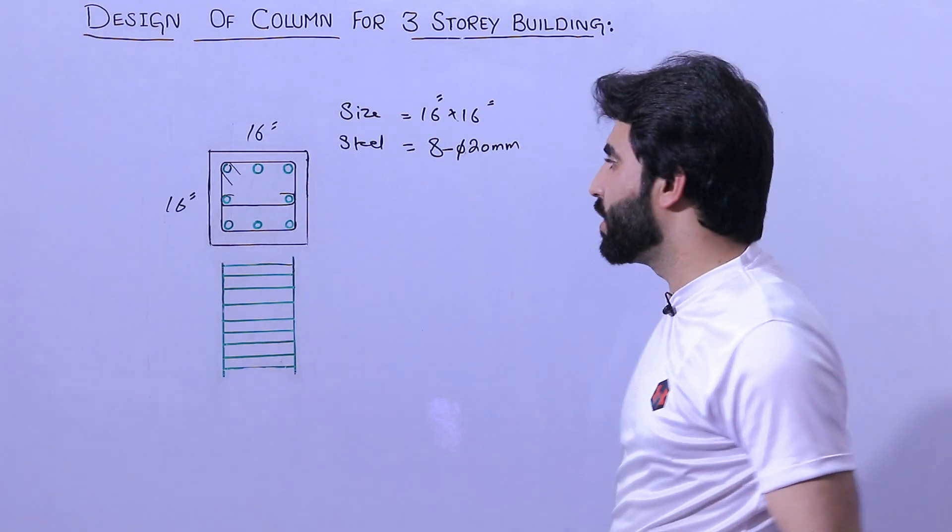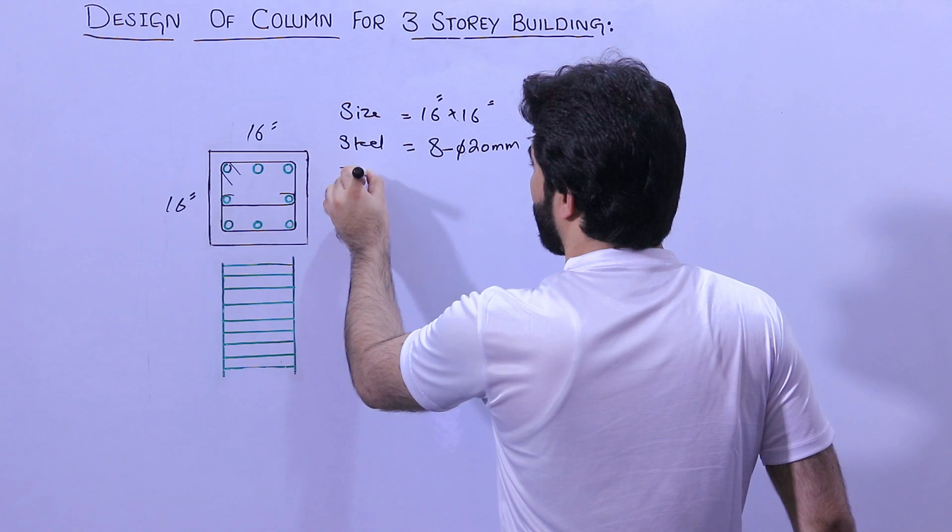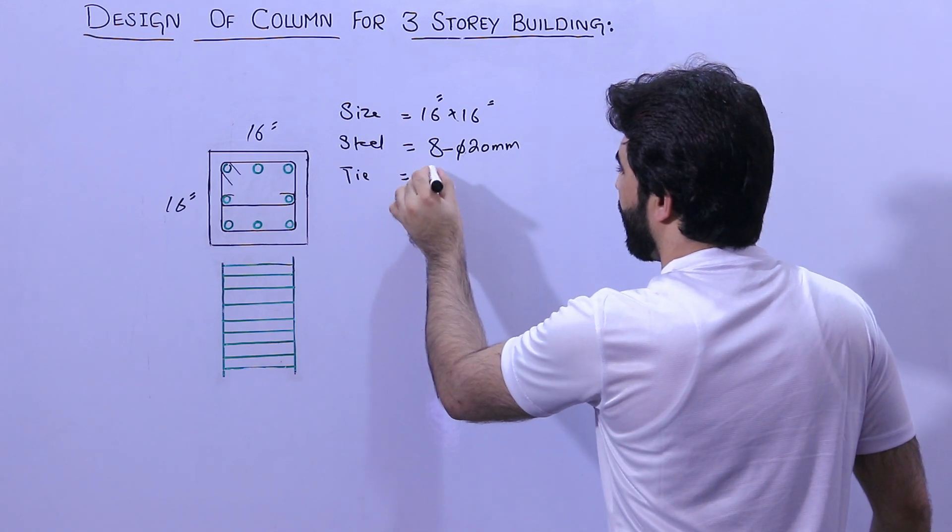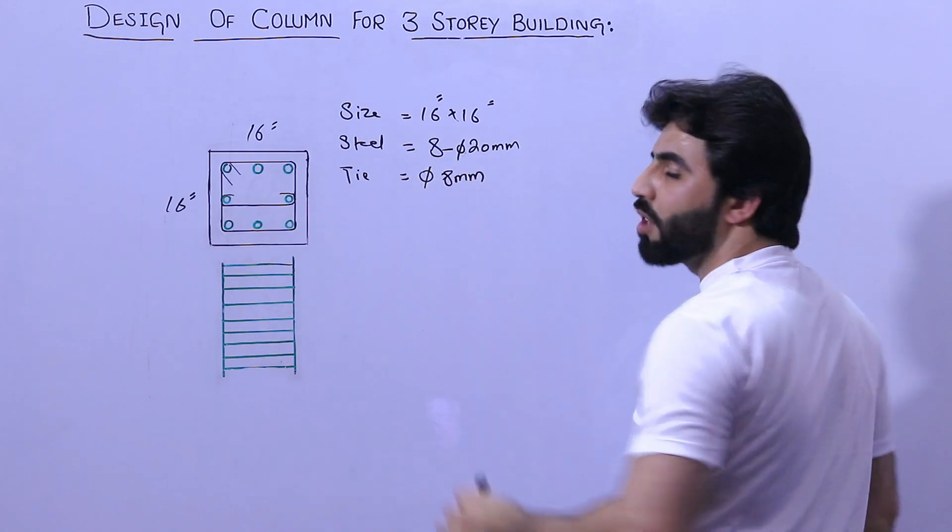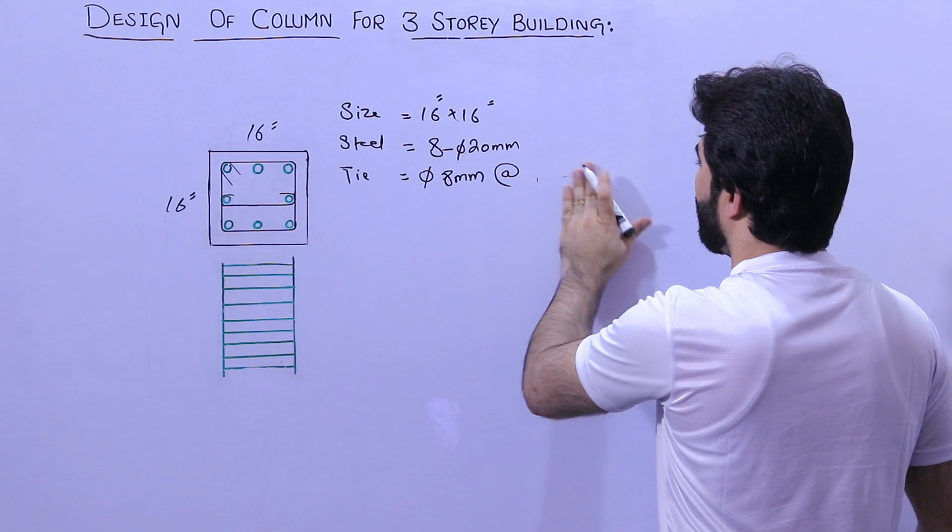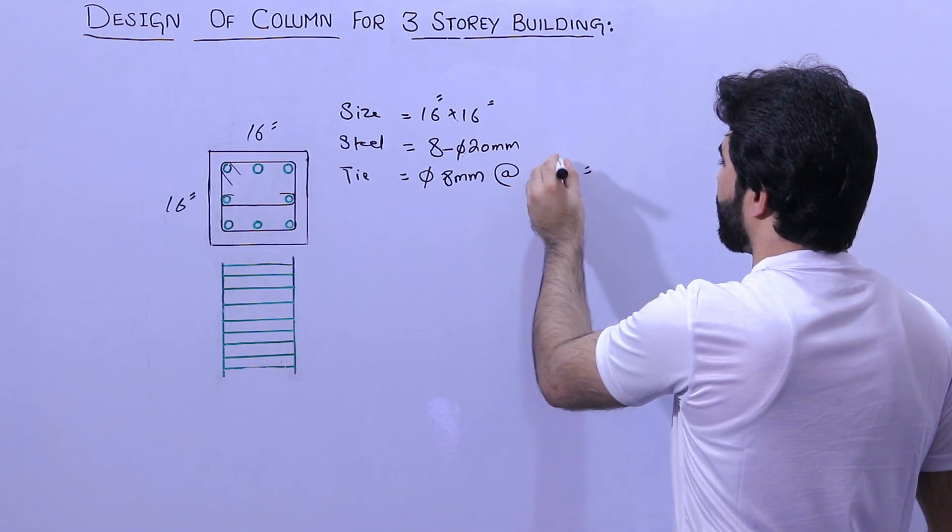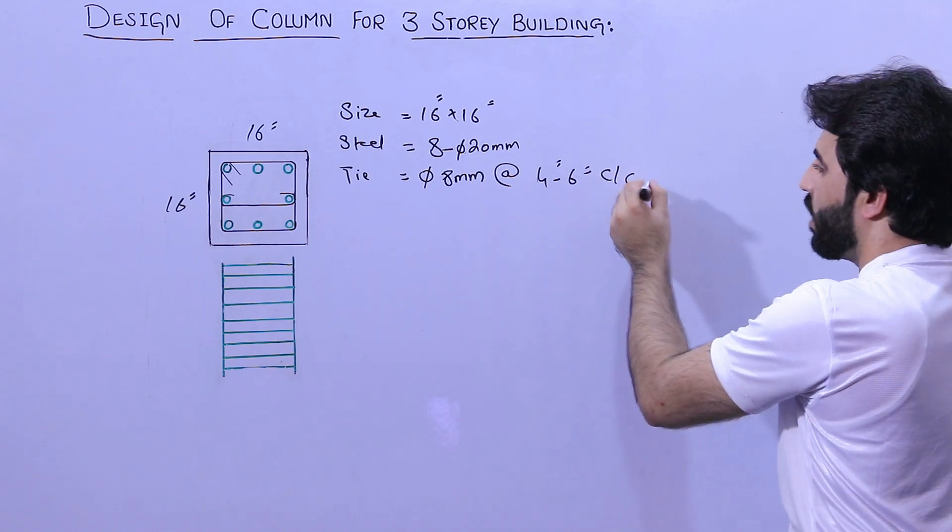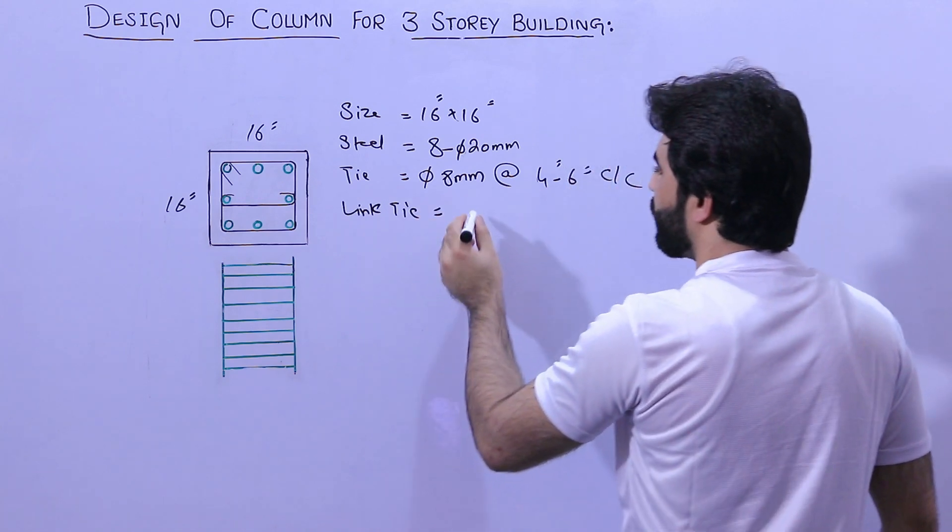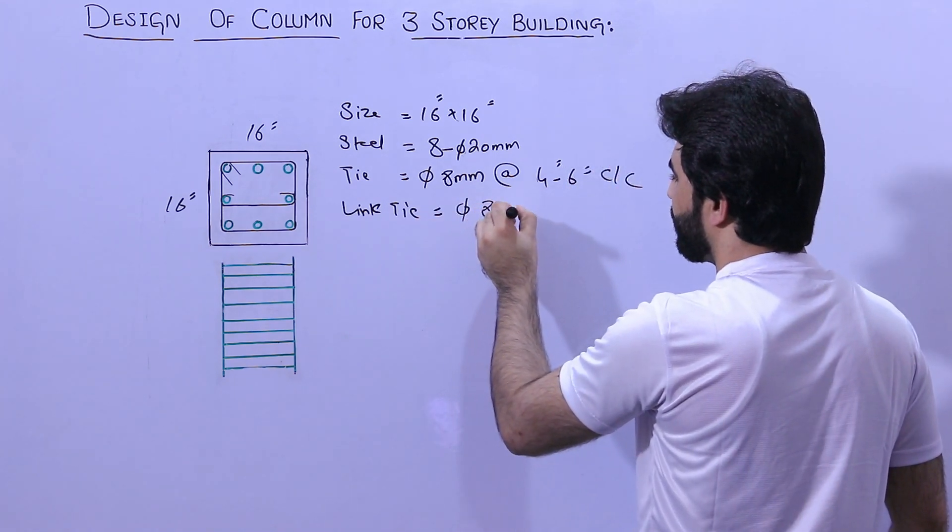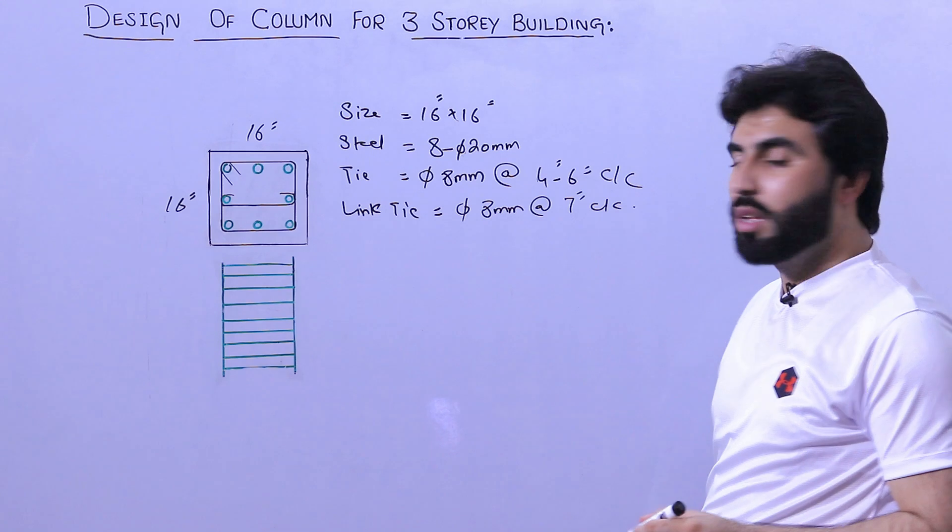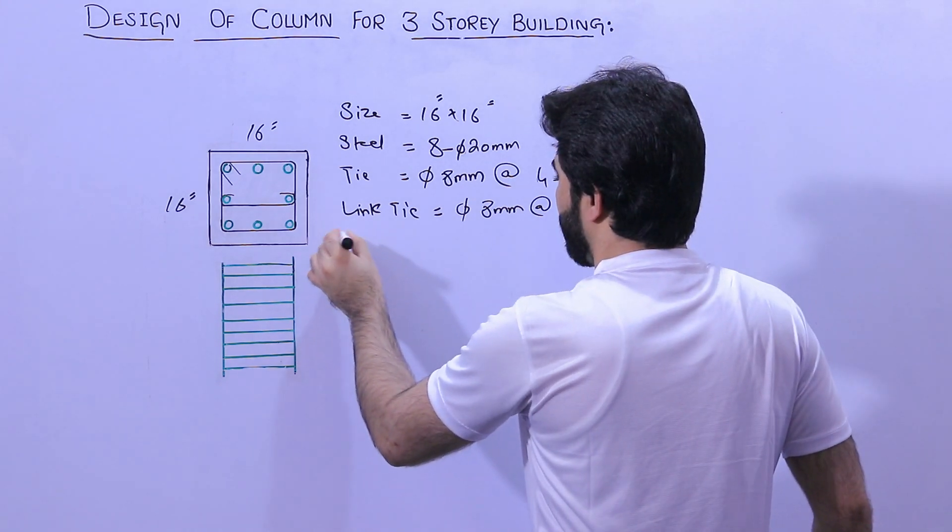Next, the ties details. You can see this is link tie. The first one we used here was 8 millimeter diameter of steel reinforcement with the spacing of 4 to 6 inches center to center. Next, length tie, you can see the diameter we used same 8 millimeter with the spacing of 7 inches center to center.